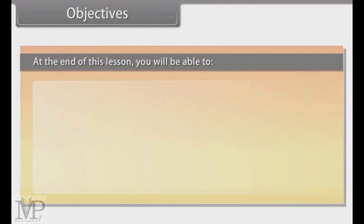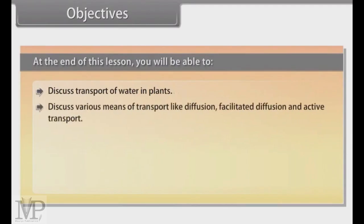Objectives. At the end of this lesson, you will be able to discuss transport of water in plants, discuss various means of transport like diffusion, facilitated diffusion and active transport, compare different transport processes, and explain plant water relations.